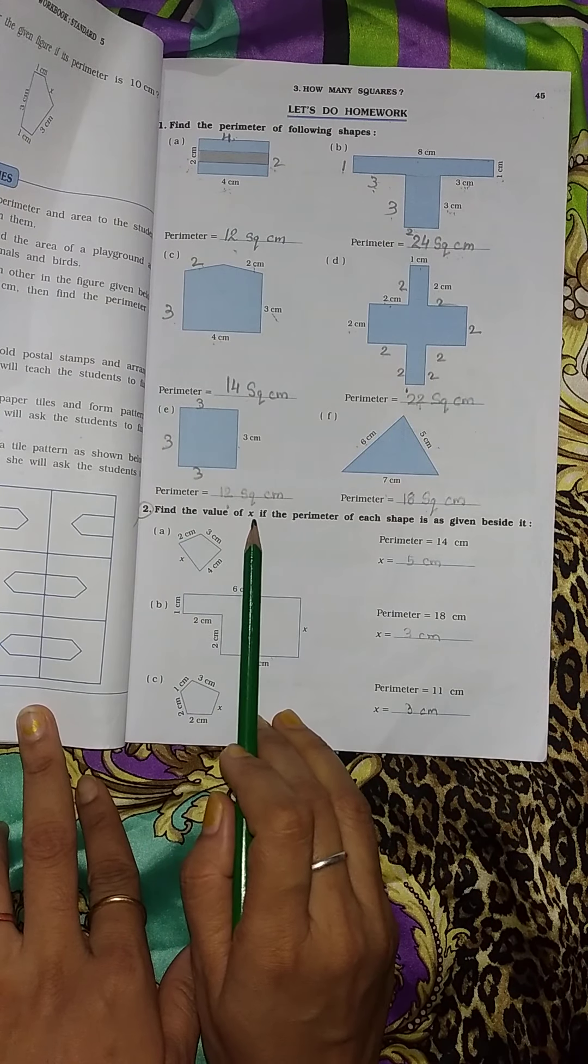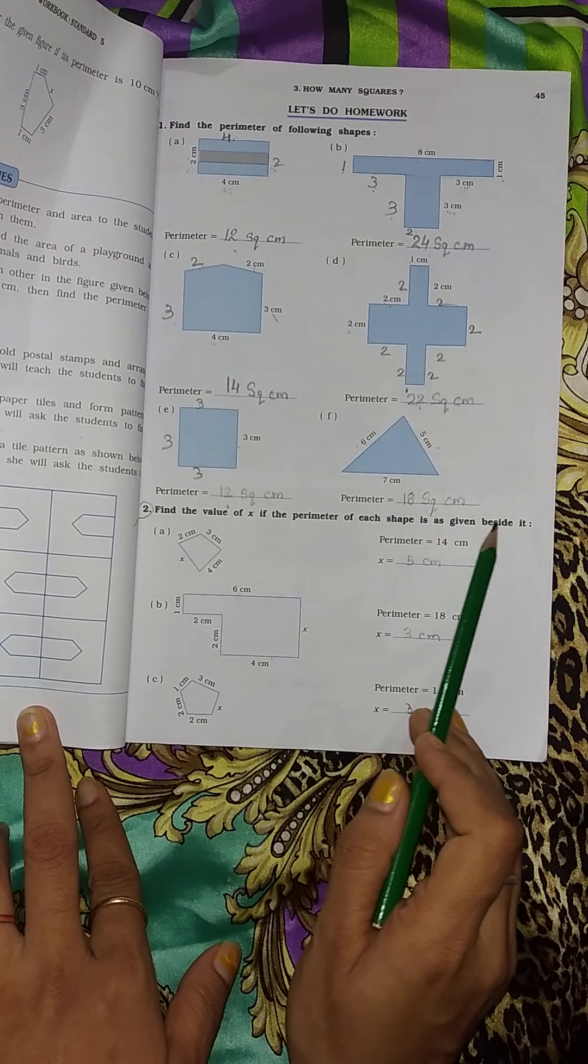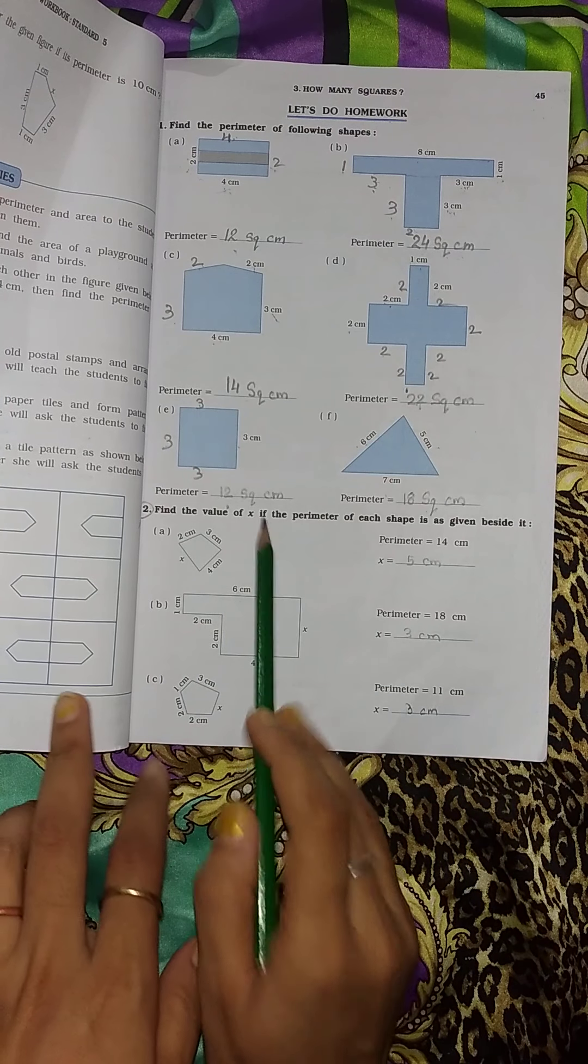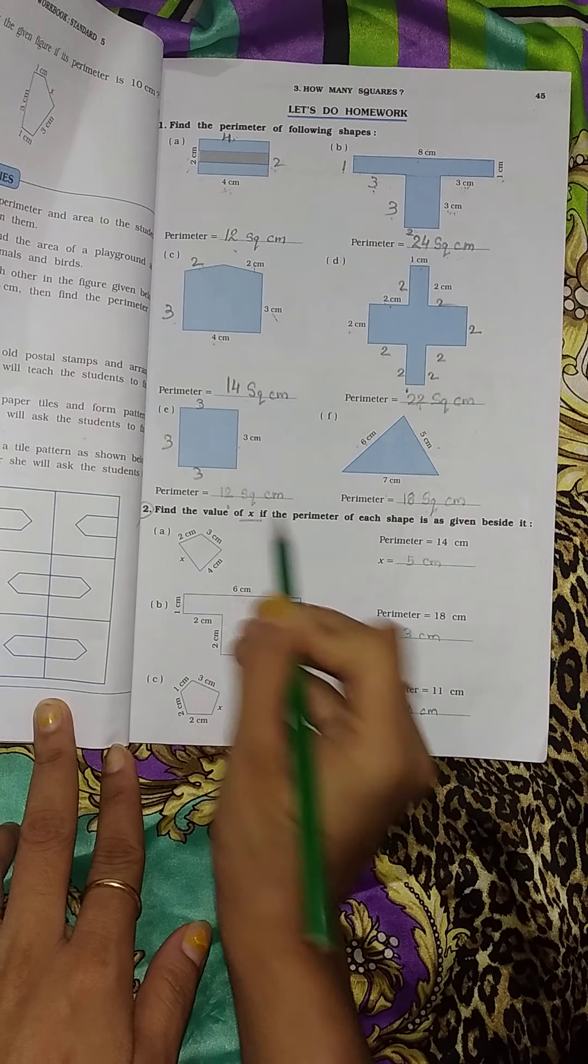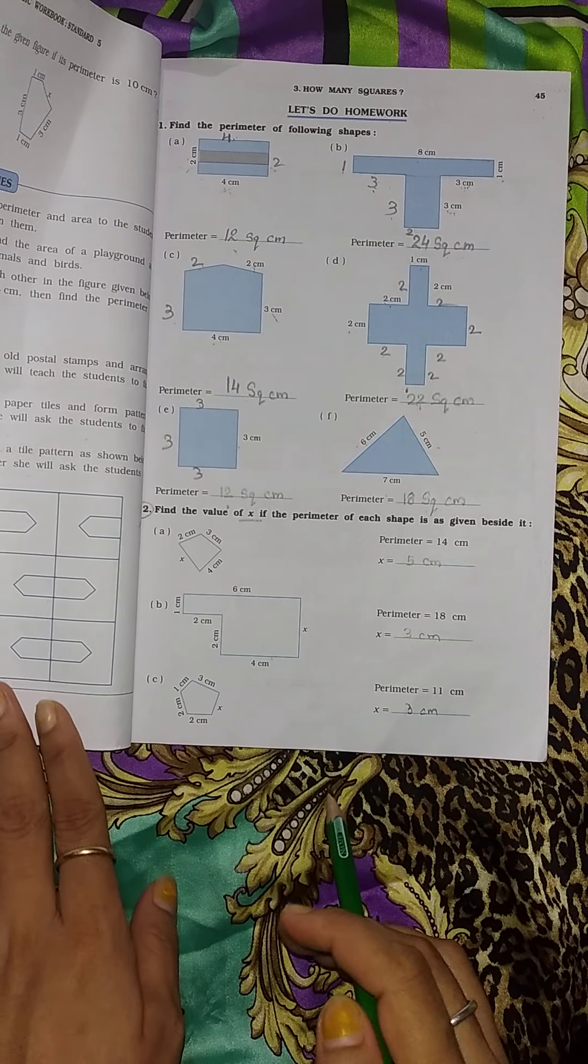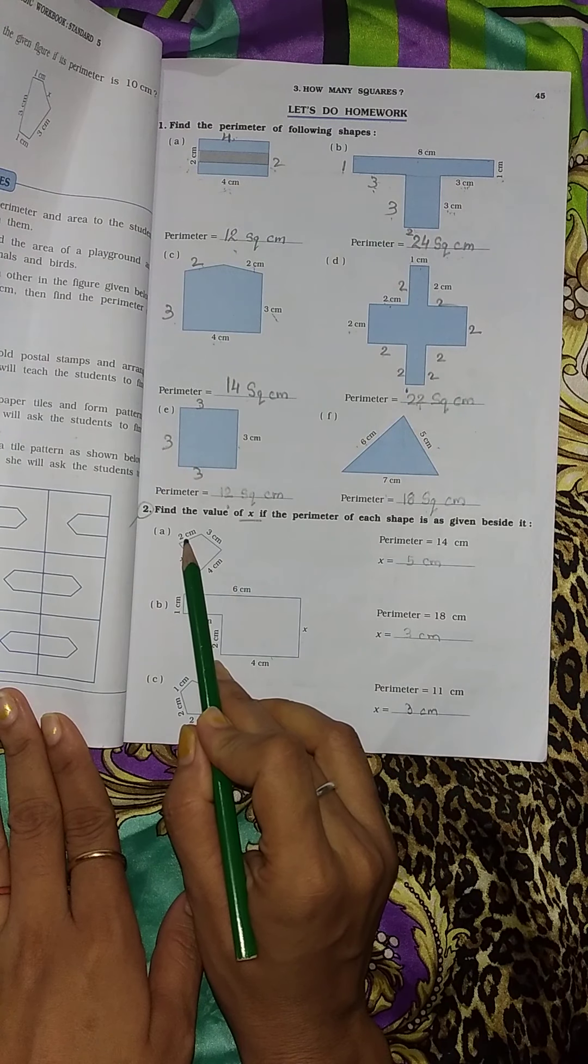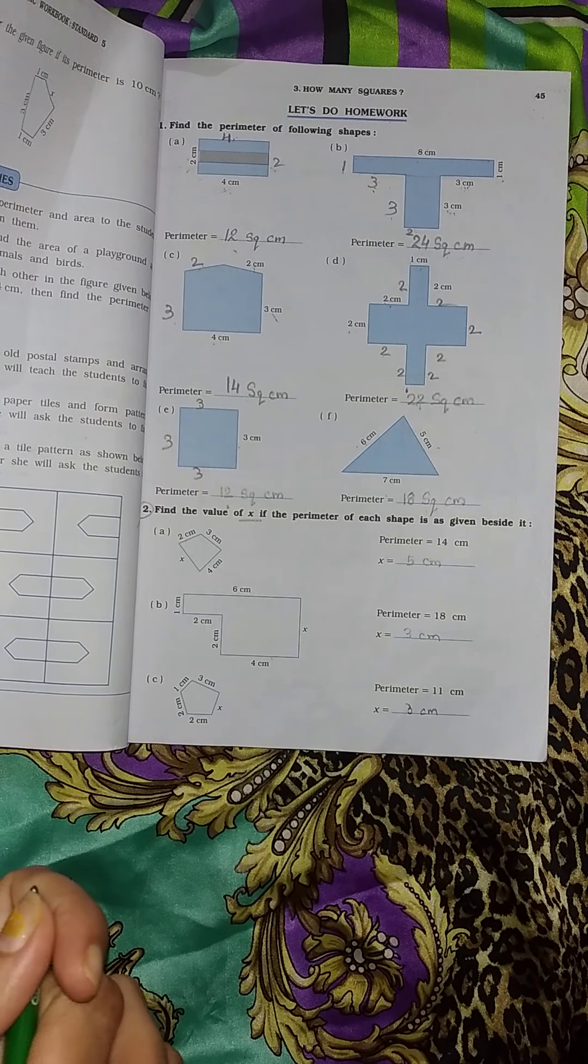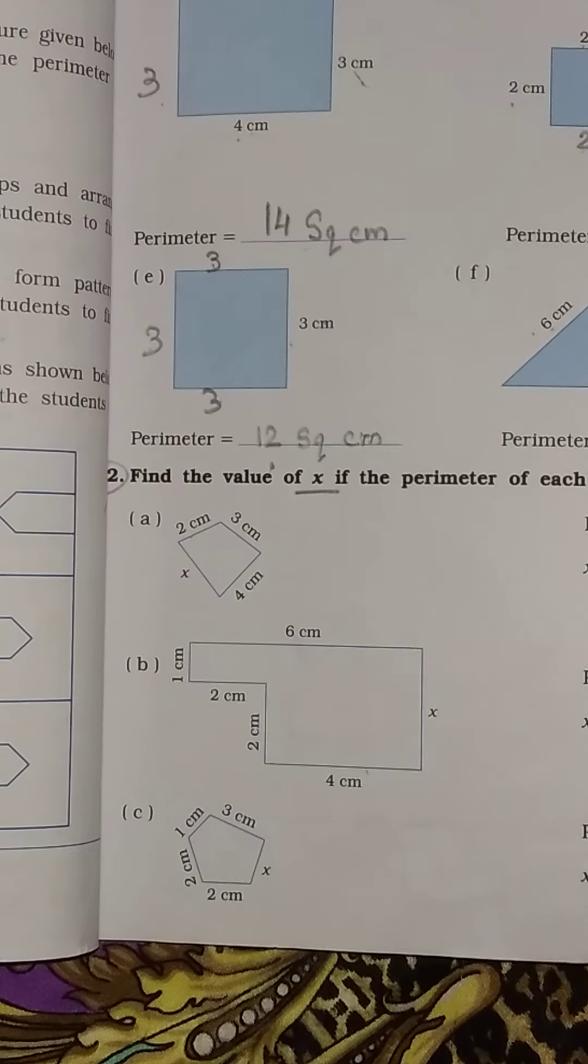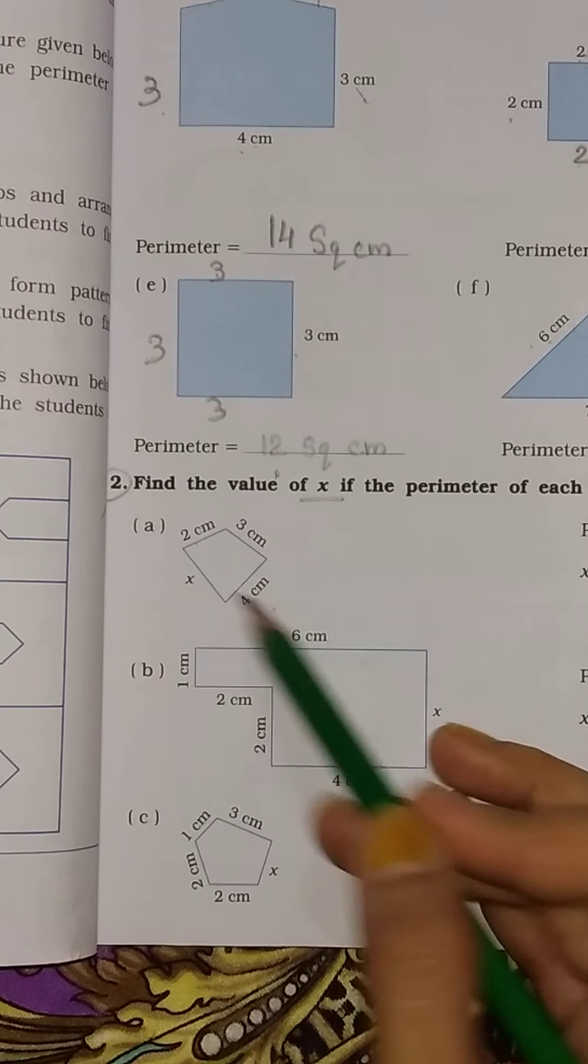Find the value of x if the perimeter of each shape is as given beside it. We have to find out the value of x. So how can we find that? I will tell you. You can see here this is 2 cm, 2 cm, 3 cm, 4 cm. This measurement is given.